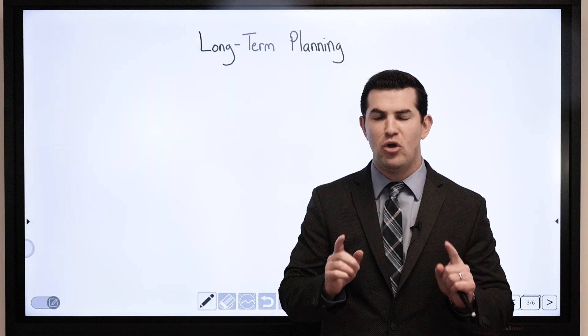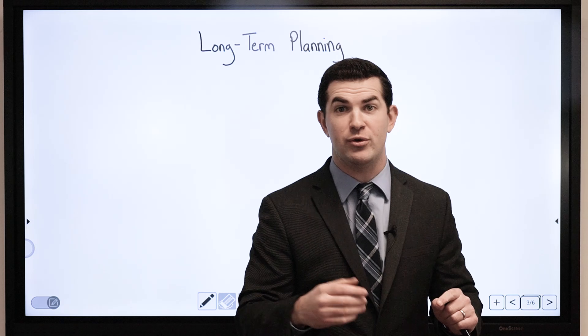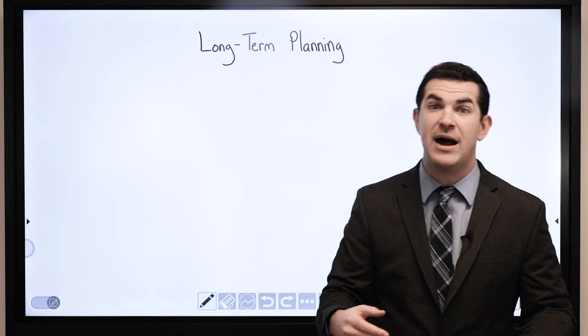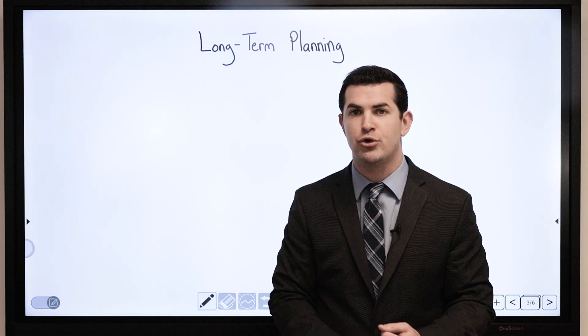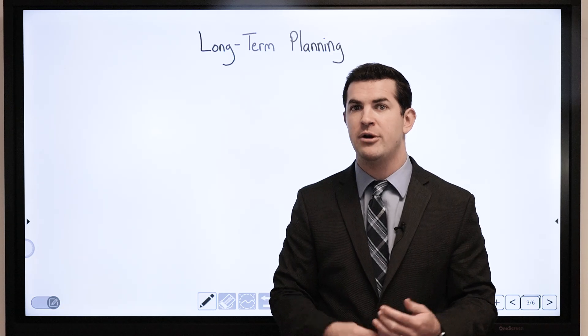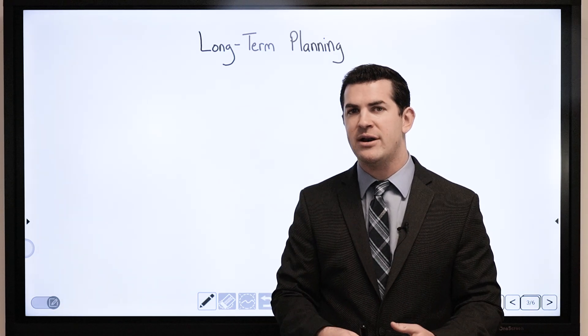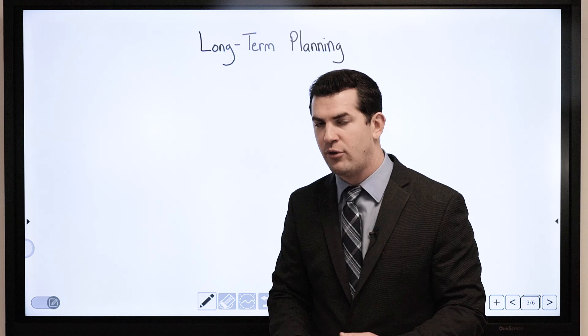Using whole life insurance for long-term planning, whether that is retirement, taking advantage of opportunities that come up in the future, or opportunities we know are going to come up. How does it work? How can I use a policy and plan long-term?